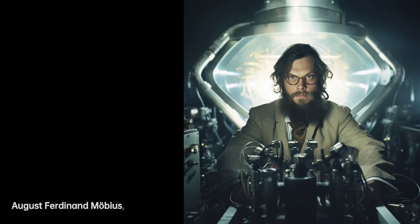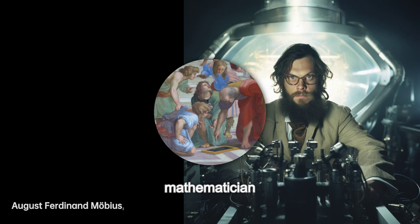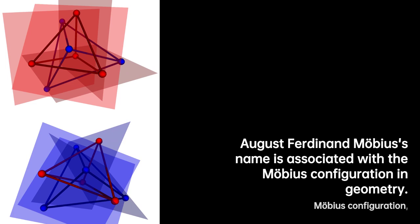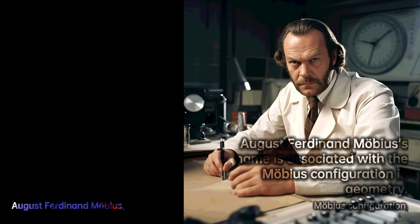August Ferdinand Möbius, a brilliant mathematician and physicist, made significant contributions to the field of mathematics. One of his most famous discoveries was the Möbius strip, a unique two-dimensional surface with only one side. Interestingly, Johann Benedict Listing had also independently discovered it a few months earlier. This groundbreaking finding revolutionized our understanding of geometry.